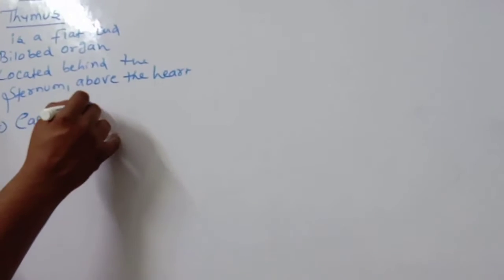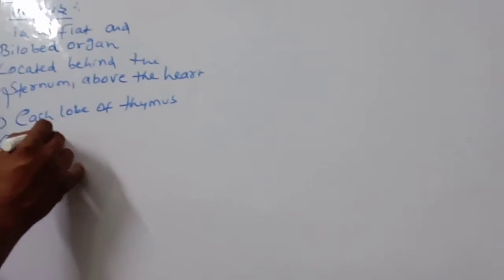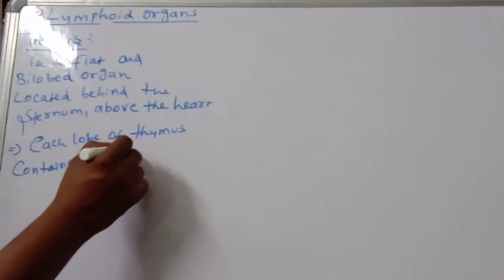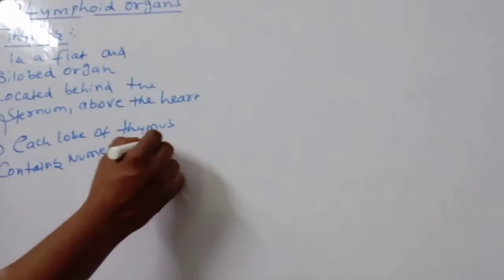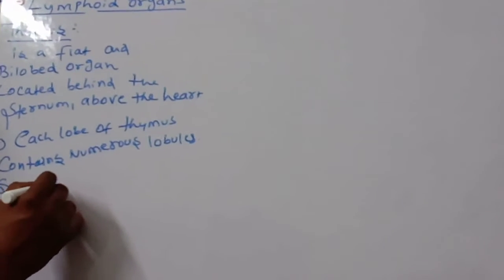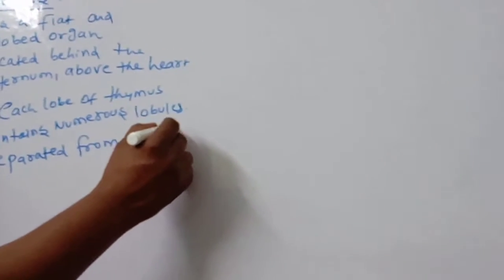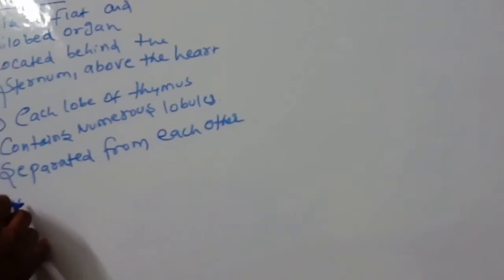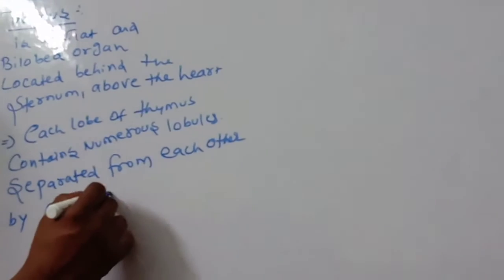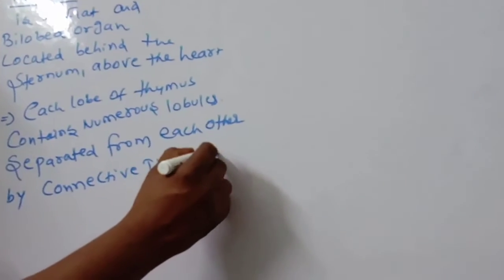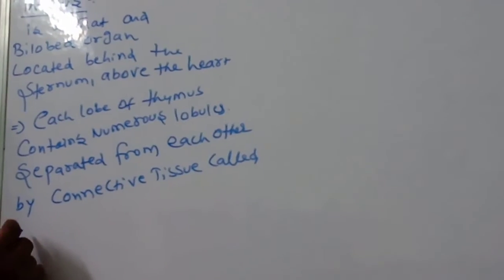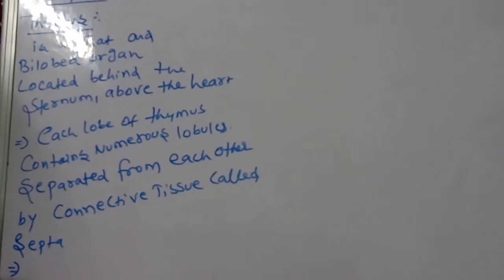Each lobe of the thymus contains numerous lobules, separated from each other by connective tissue called septa. Each lobule is differentiated into two compartments: the outer compartment, also called the outer cortex, which is densely packed with immature T cells called thymocytes.